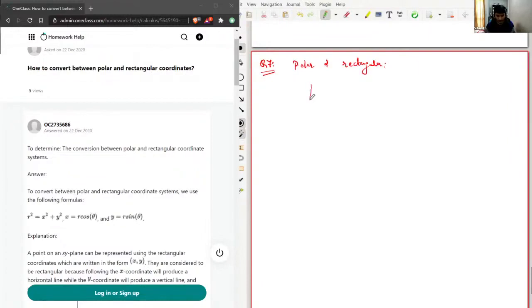So I'll just draw a coordinate system. Let's say we have a point P here. This is the y-axis, this is the x-axis. This distance is y, this distance is x.